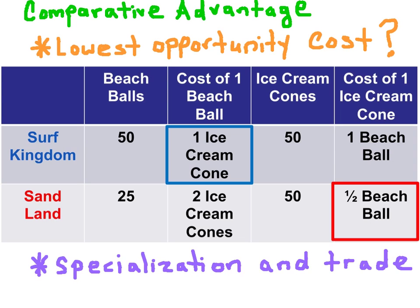Let's put all this information into a chart to determine the opportunity cost of one beach ball and the opportunity cost of one unit of ice cream in these two economies. Whichever economy has the lower opportunity cost in the production of a good is said to have the Comparative Advantage. When they have the Comparative Advantage, that means they would specialize in the production of that good and export it if trade is to occur.